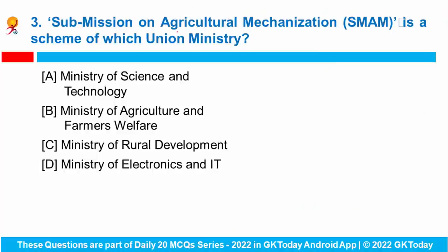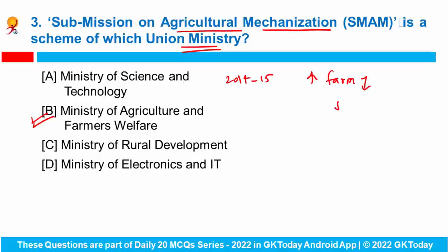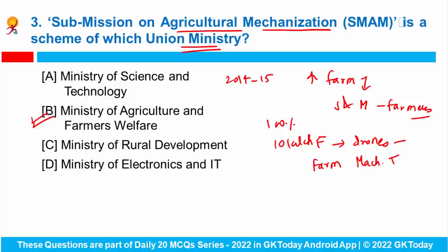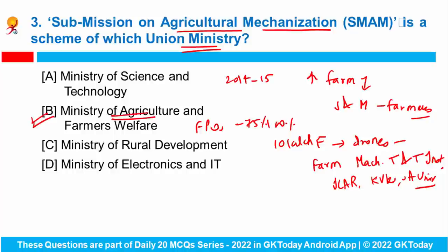Question number three: Sub-Mission on Agricultural Mechanization is a scheme of the Ministry of Agriculture and Farmers Welfare, launched in 2014-15 to increase the reach of farm mechanization to small and marginal farmers and regions where farm power availability is extremely low. As per recent guidelines, a grant of up to 100% of the cost of an agriculture drone or 10 lakh rupees is provided for purchase by farm machinery training and testing institutes, ICAR institutes, KVKs, and State Agricultural Universities for demonstrations. FPOs can get up to 75% of the drone cost.